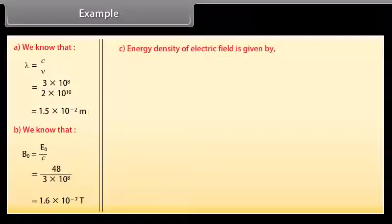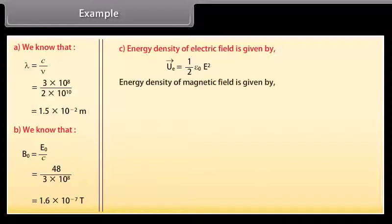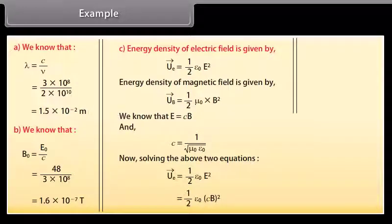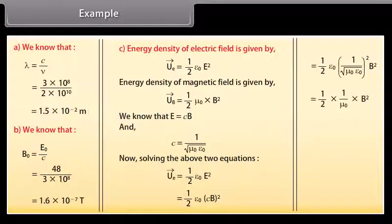Energy density of electric field is given by half epsilon naught E square. Energy density of magnetic field is given by half mu naught B square. We know that E is equal to C B and C is equal to 1 upon under root mu naught epsilon naught. On solving the above two equations, we get average energy density of electric field equals the average energy density of magnetic field.